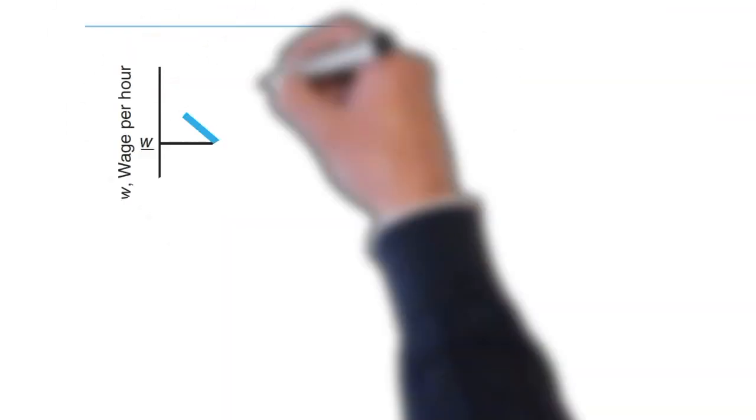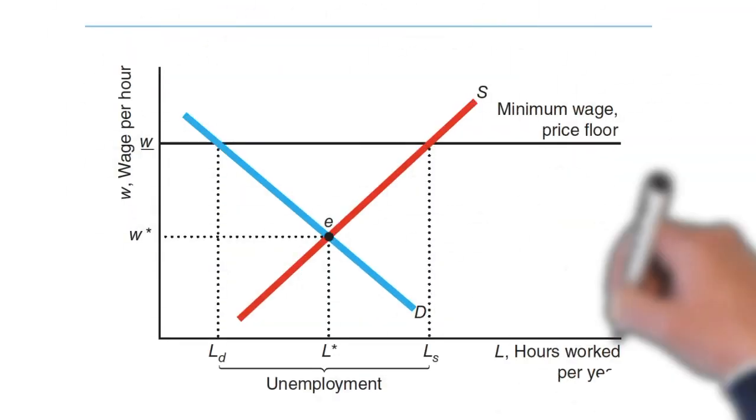Another price control is the price floor. An instance is the minimum wage in labor market. If the minimum wage binds, that is the minimum wage is higher than the equilibrium wage, then it will cause unemployment, which is a persistent excess supply of labor.